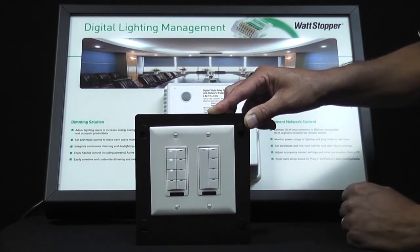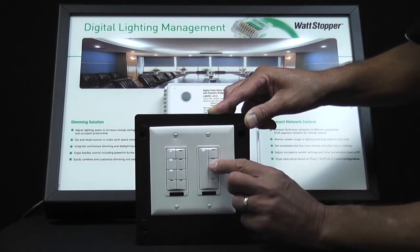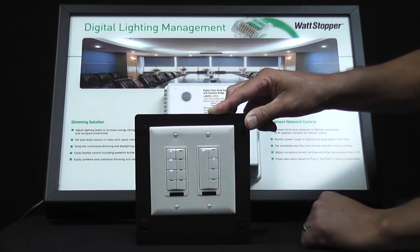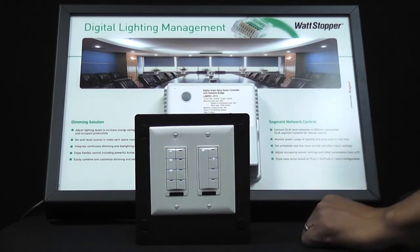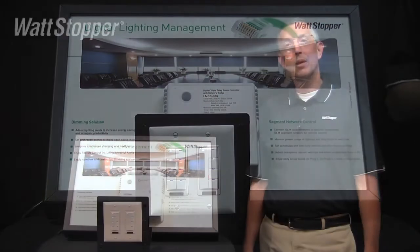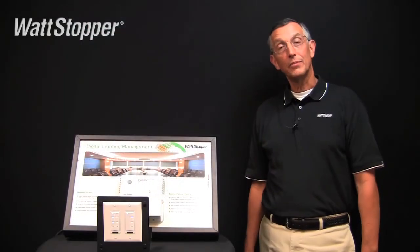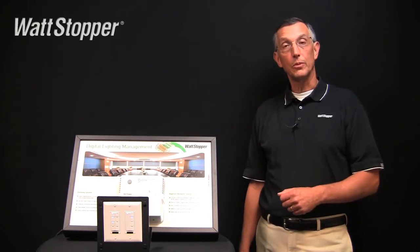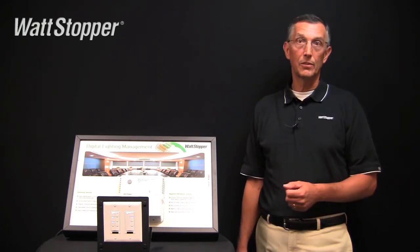So now we have our loads dimmed to where we want them. We can go ahead and press and hold the scene button for 5 seconds and save the scene. There you have it — I've just saved the scene without having to have dimmers in the room using Active Dim.